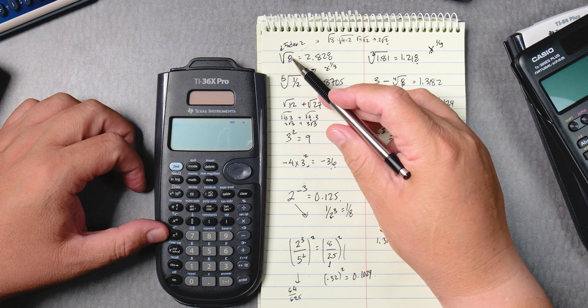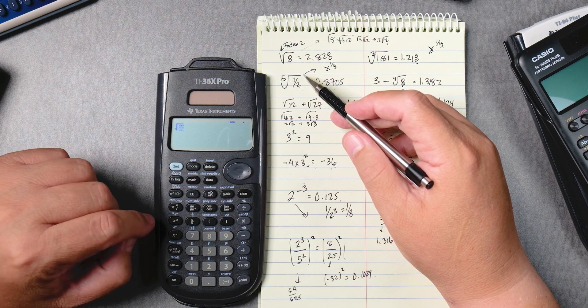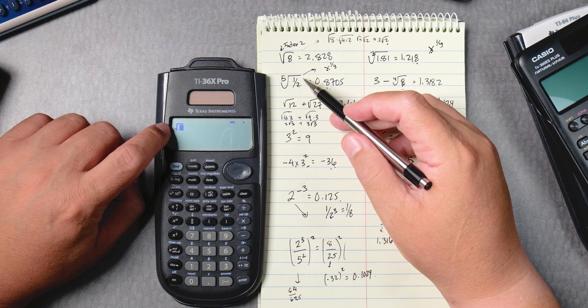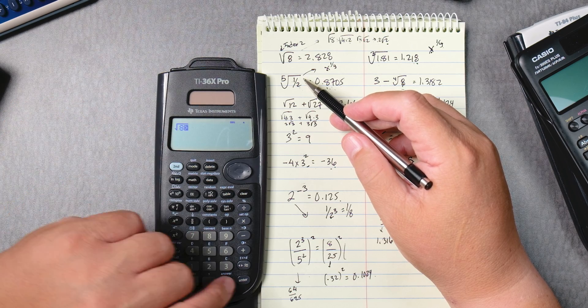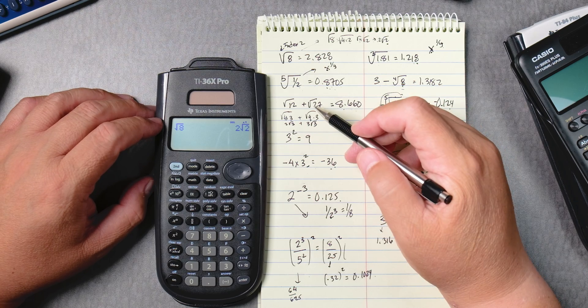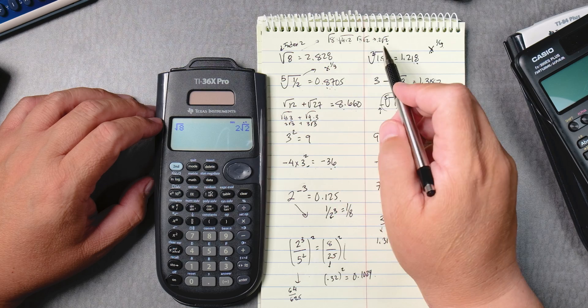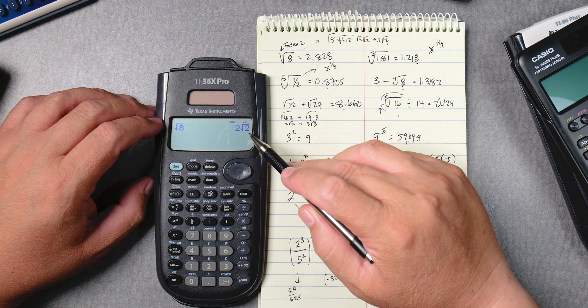So here to do the square root of 8, we press second and then we press the x squared button to get the square root. We press 8 and then enter and it gives us a reduced answer. The square root of 8 is 2 square root of 2.